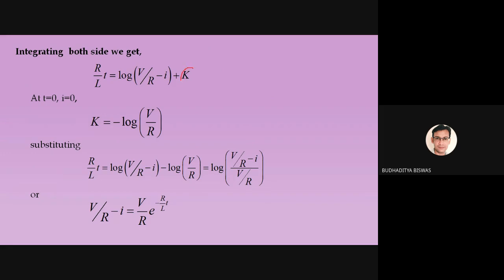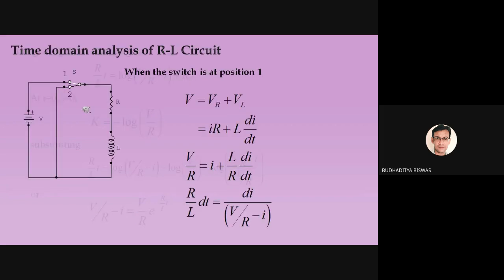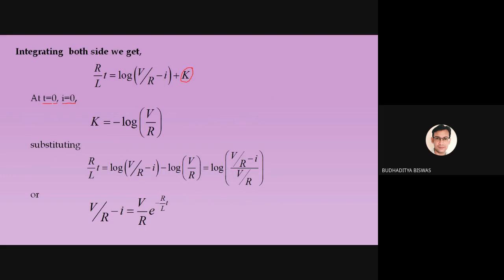The initial condition is: at t = 0, what is the current? At t = 0, we just throw the switch to position 1. Due to the presence of the inductor, current is not able to reach its steady state value instantly. So at t = 0, current equals 0. Substituting this initial condition gives K = −ln(V/R).